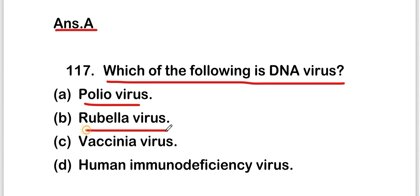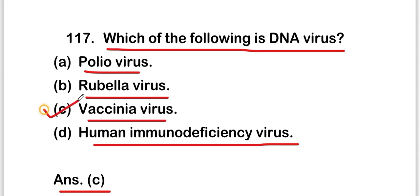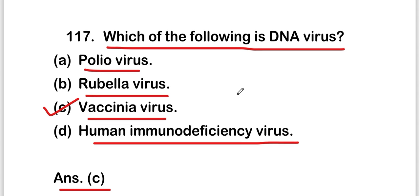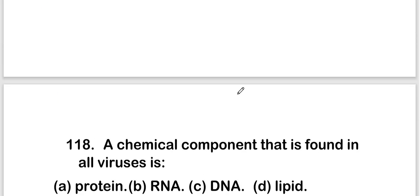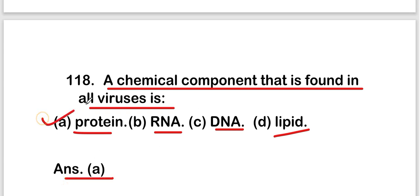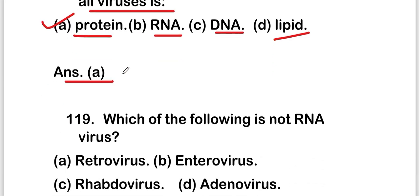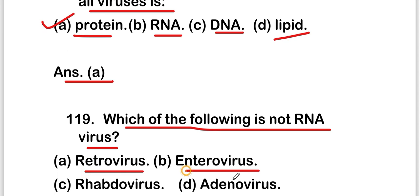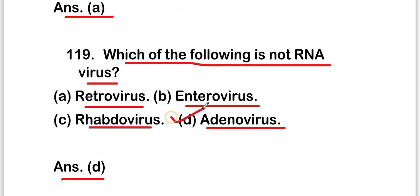The next question is: which of the following is a DNA virus — poliovirus, rubella virus, vaccinia virus, or human immunodeficiency virus? The right answer is option C; vaccinia virus is a DNA virus. Next: a chemical component found in all viruses is — protein, RNA, DNA, or lipid? The answer is option A, protein. Next: which is not an RNA virus — retrovirus, enterovirus, rhabdovirus, or adenovirus? The answer is option D, adenovirus.